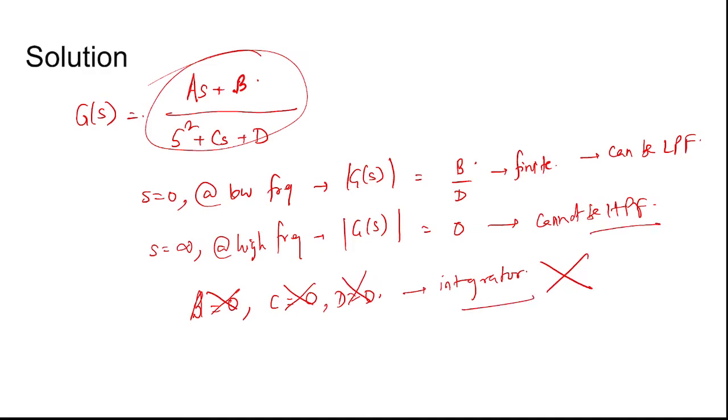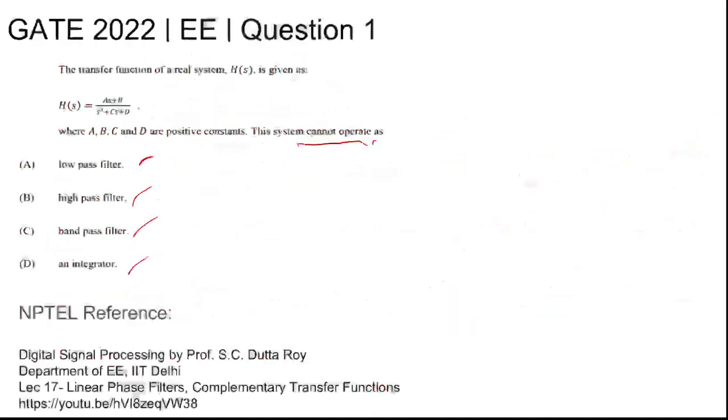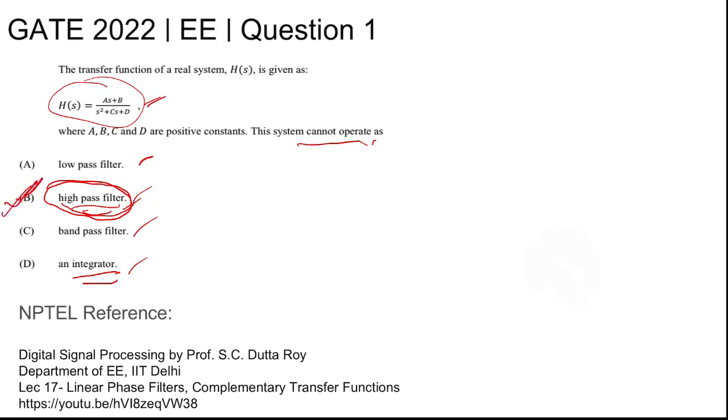It cannot be a high pass filter, neither can it be an integrator. Because of this ambiguity, multiple options are possible. However, we go ahead with the more prominent option because it can never be a high pass filter irrespective of any values of A, B, C, and D. So option B is the most appropriate option. Thank you.